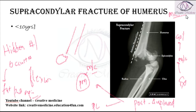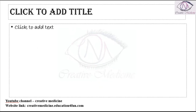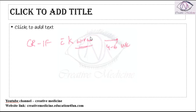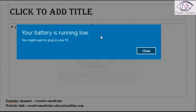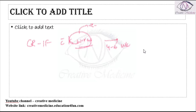If supracondylar fracture cannot be diagnosed by X-ray, the next investigation is MRI. MRI is better than CT for diagnosis. This fracture is an orthopedic emergency. Treatment involves closed reduction with internal fixation using K wires. After 4 to 6 weeks, the K wires can be removed. Sometimes injury to the brachial artery can occur, and if so, loss of pulse may be seen in these patients.